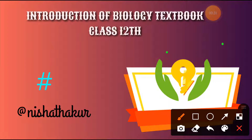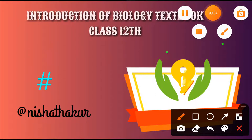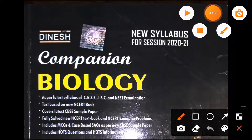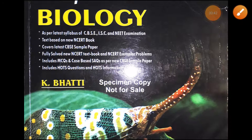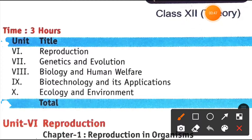I will give you a little introduction to your book. This is your companion's book, so you can purchase this. This is your introduction — look at your syllabus. There are five units, plus one more, continuing to six units total.